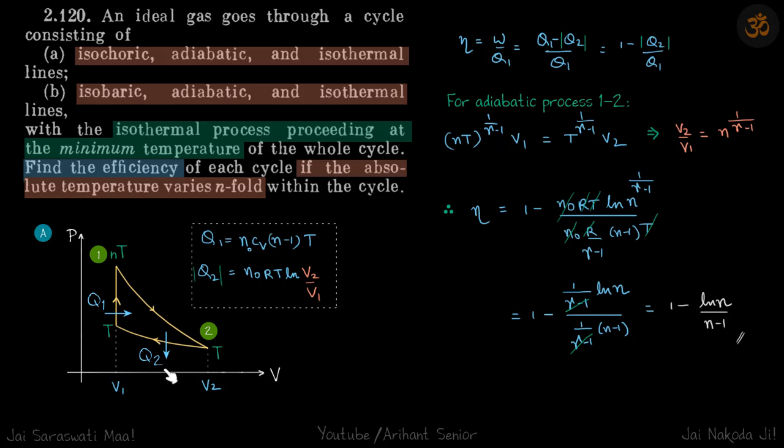Now for efficiency, like we have done in previous problems, that will be 1 minus Q2 by Q1. And Q2 for isothermal process is NRT ln V2 by V1, and for isochoric, Q1 is this.